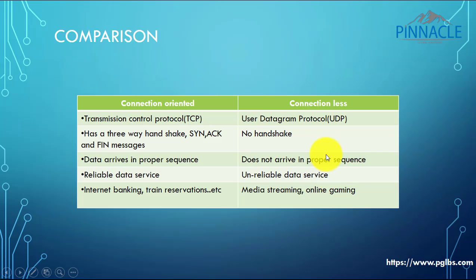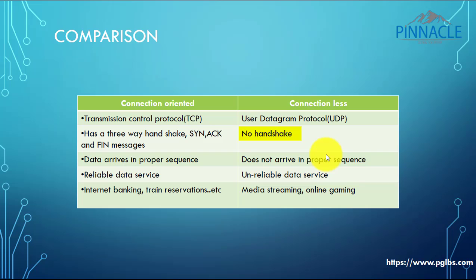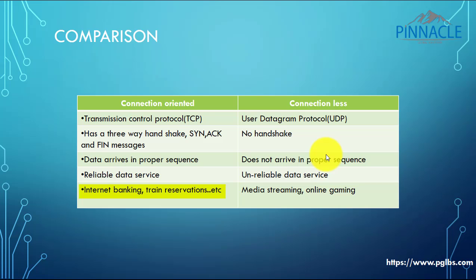Here is a comparison matrix of connection-oriented versus connectionless service. Connection-oriented service uses TCP - transmission control protocol - while connectionless service uses UDP - user datagram protocol. Connection-oriented service has a three-way handshake with SYN, ACK, and FIN messages. Connectionless service has no handshake. In connection-oriented service data arrives in proper sequence, making it a reliable data service. In connectionless service data does not arrive in sequence, so it is called unreliable. Internet banking and ticket reservations use connection-oriented service, while media streaming and online gaming use connectionless service.